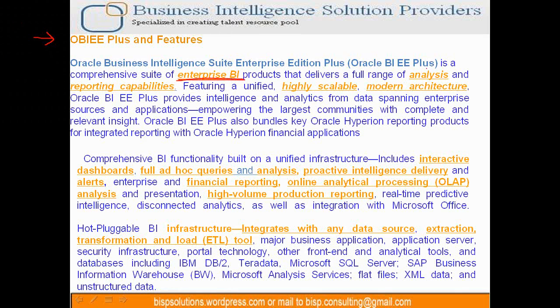OBI is highly scalable. If I designed my reporting solution for 400 users and, as a result of an acquisition, now have 500 users, we can add more servers, provide load balancing, and use various scaling techniques. Scalability again depends 70% on your underlying database and 30% on the reporting side, so your architecture should be designed at the reporting layer in a way that supports scalability.